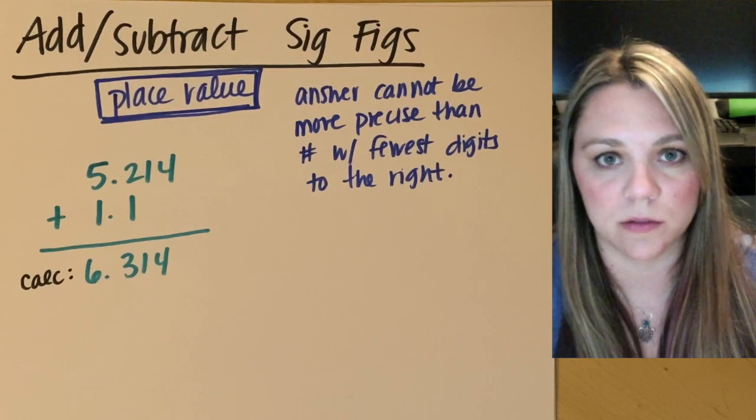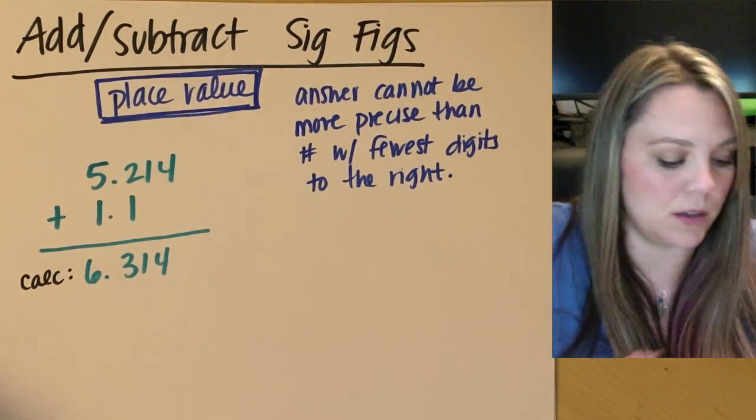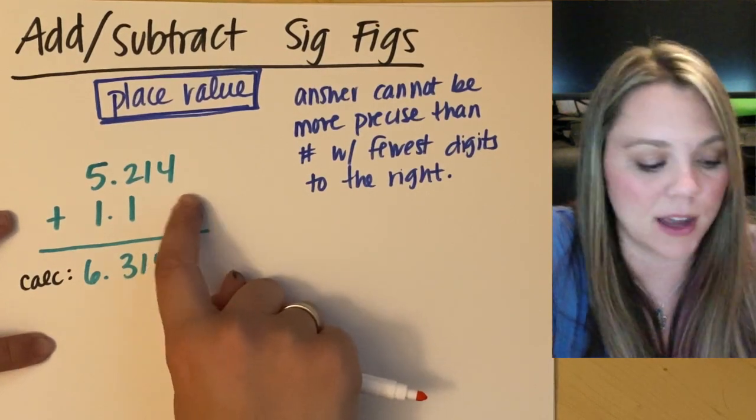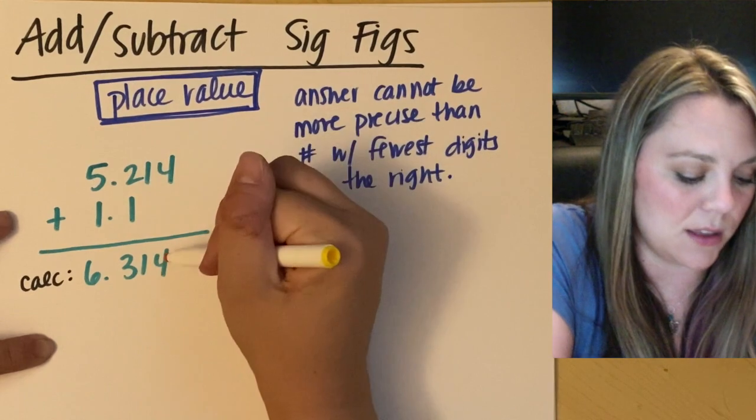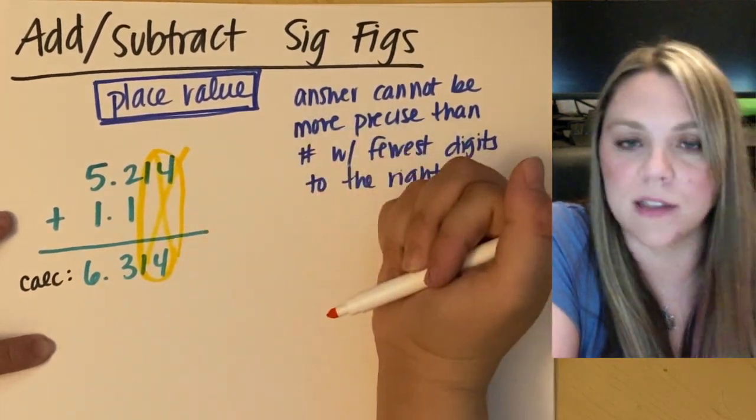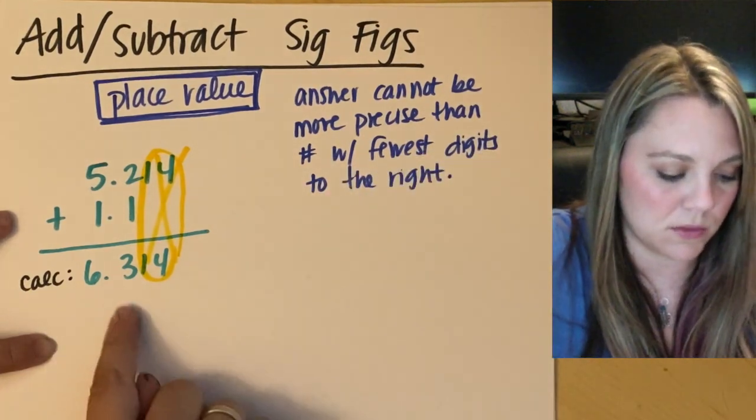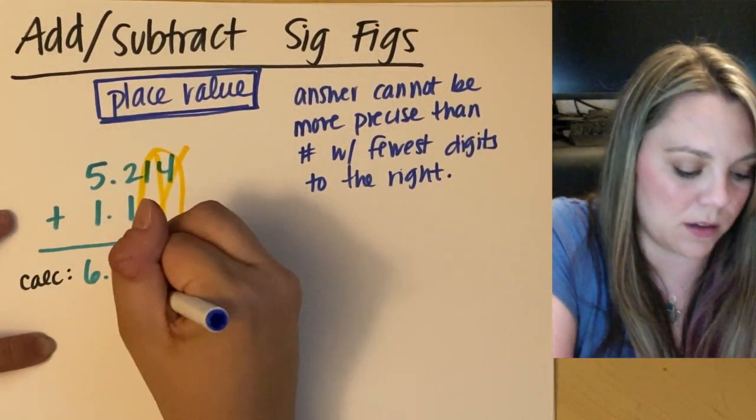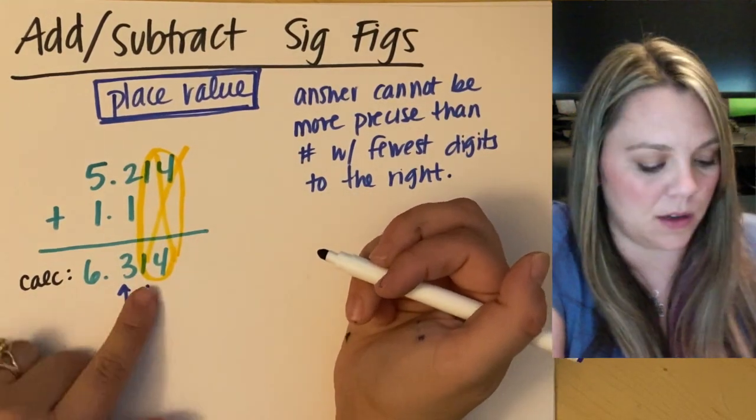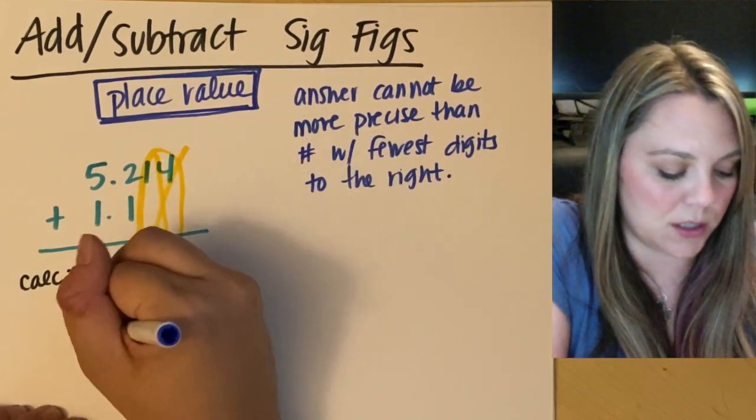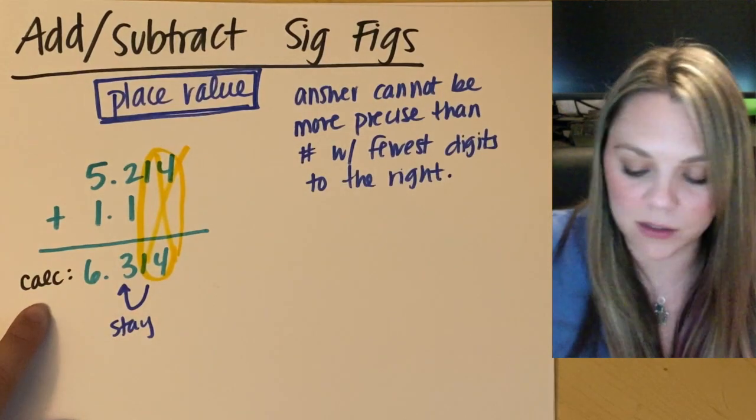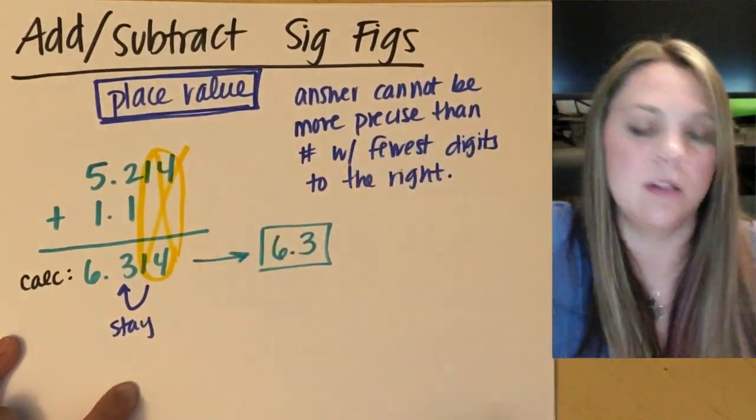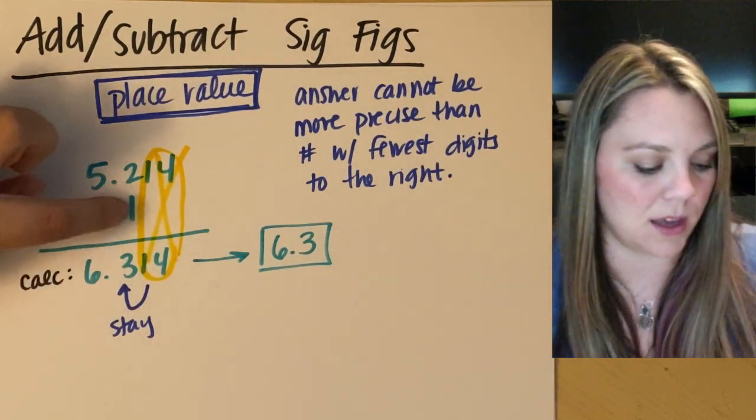My calculator is wrong. I cannot be this precise in my number. I can only go to this place value, to my tenths place value here. I cannot go beyond it because I was not that precise. I did not have that significant figure for this measurement. So anything here is out. So I can only go to my tenths place here. Now, I do need to actually look at these numbers because I need to figure out if I need to round up or stay the same. But the 1 does not make the 3 round up. I just stay. So my calculator tells me 6.314, but in reality, my answer is going to be 6.3. Because I cannot go beyond the precision that I know. I can't go beyond this place value.